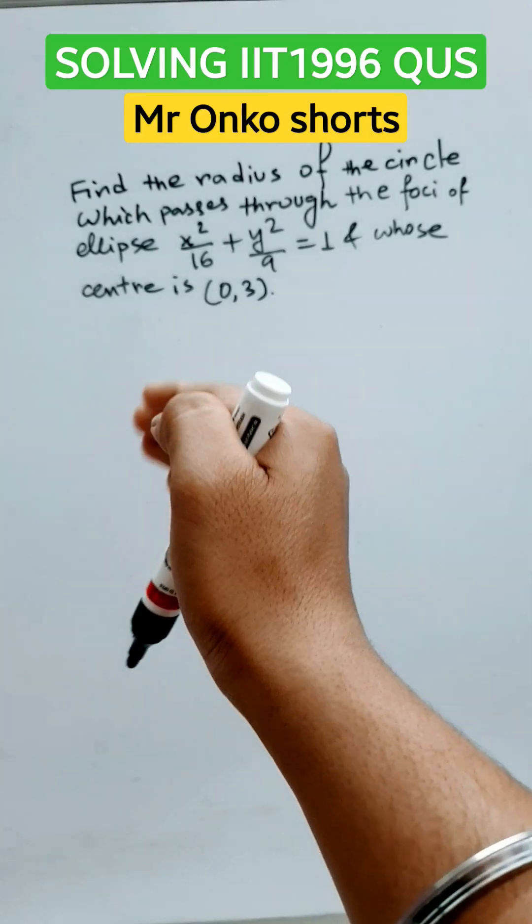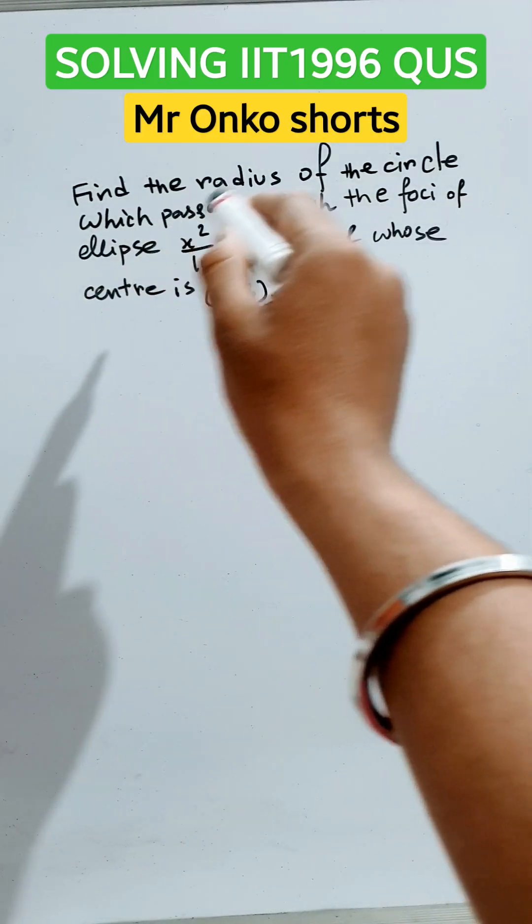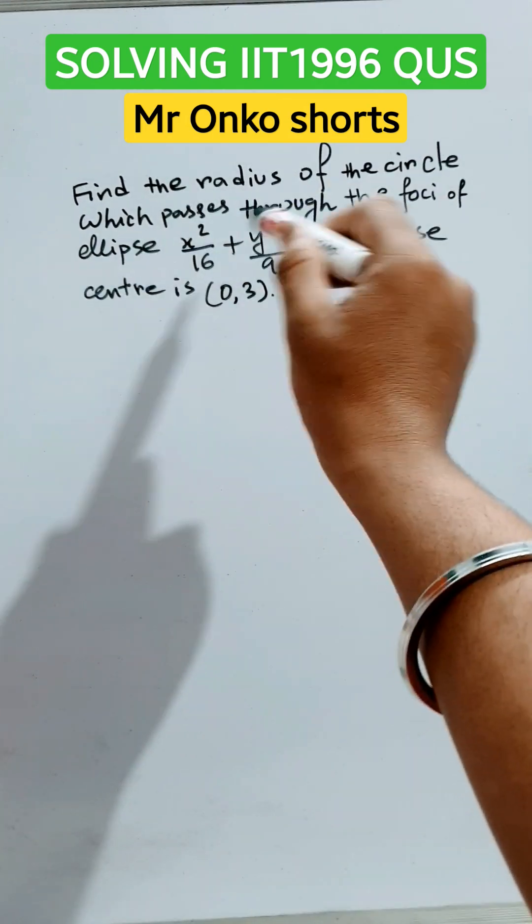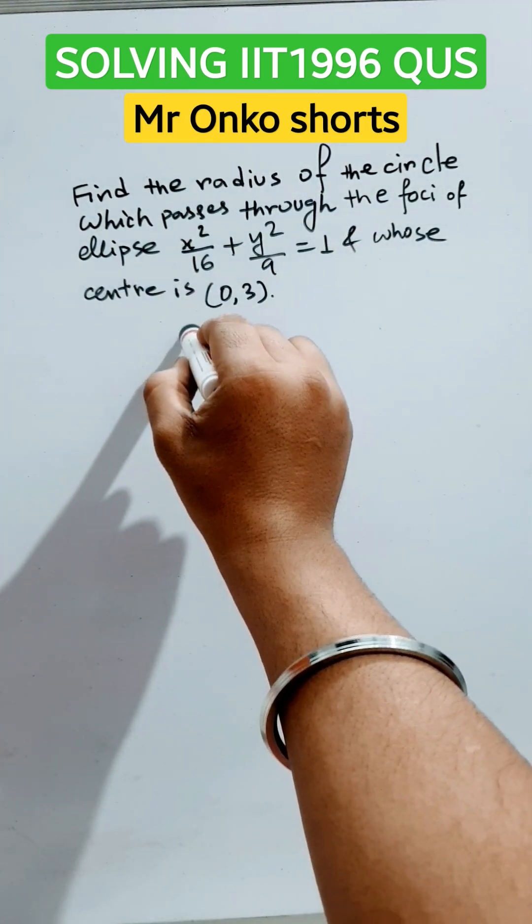Hello guys, welcome to Mr. Anko Shorts. Today's question is: find the radius of the circle which passes through the foci of the given ellipse x²/4² + y²/3² = 1 and whose center is (0,3).